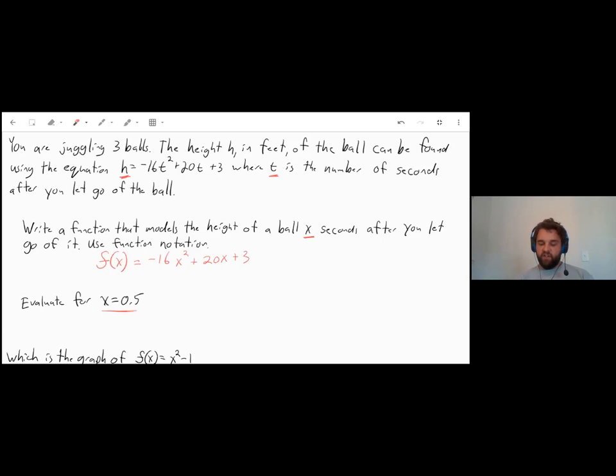And now if we want to evaluate when x is equal to 0.5, well that just says it's f of 0.5, which is equal to negative 16 times 0.5 squared plus 20 times 0.5 plus 3. And if we go ahead and type that into our calculator real quick, negative 16 times 0.5 squared plus 20 times 0.5 plus 3, we will come out to an answer of 9. So after half a second, the height of the ball is going to be 9 feet off the ground.